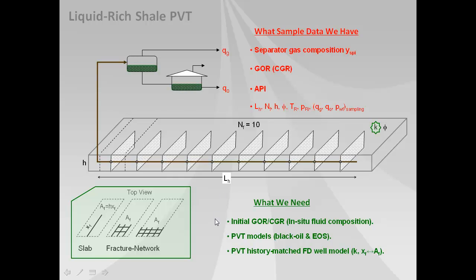At the end of the history matching process one has at the time of sampling a match of the separator gas composition, the producing gas oil ratio, and the liquid API. And if you have other available PVT data those data would also be included in the history matching process.